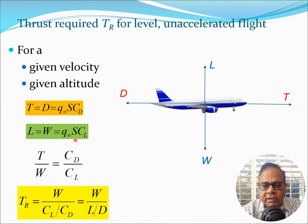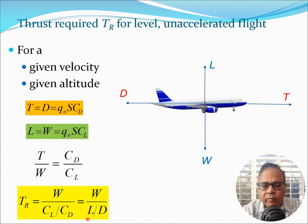Similarly, I can write the second equation L equals W, that is q_infinity × S × C_L, where C_L is the lift coefficient of the airplane. Then I divide these two equations to get T/W equals C_D/C_L, and using this I can write the thrust required as W divided by (C_L/C_D), or also W divided by L/D.